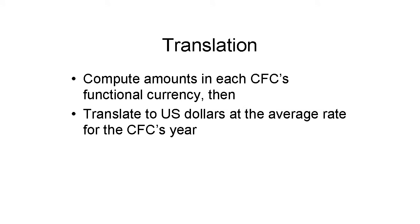Everything has to be converted to U.S. dollars before it goes on a U.S. tax return. This includes the 951 Cap A amounts. The amounts are all first computed in the CFC's functional currency, then translated to dollars at the average rate for the year.